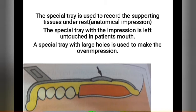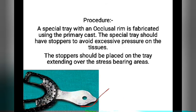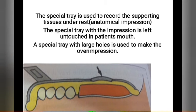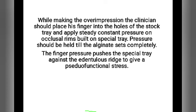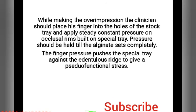The special tray is used to record the supporting tissue under rest, that is the anatomical impression. The special tray with impression is left untouched in the patient's mouth, as in the Maclean's procedure. A special tray with large holes is used to make the over-impression. While making the over-impression, the clinician places fingers into the holes of the stock tray and applies steady, constant pressure on the occlusal rim built on the special tray. Pressure is held until the alginate sets completely. This finger pressure pushes the special tray against the edentulous ridge to give a pseudo-functional stress.